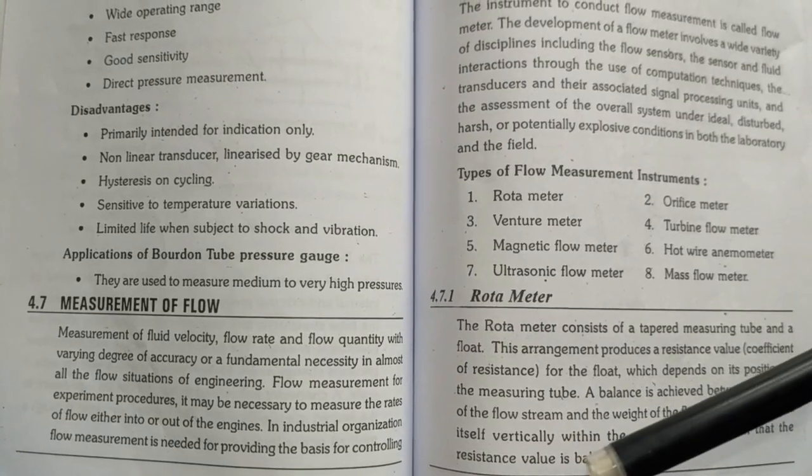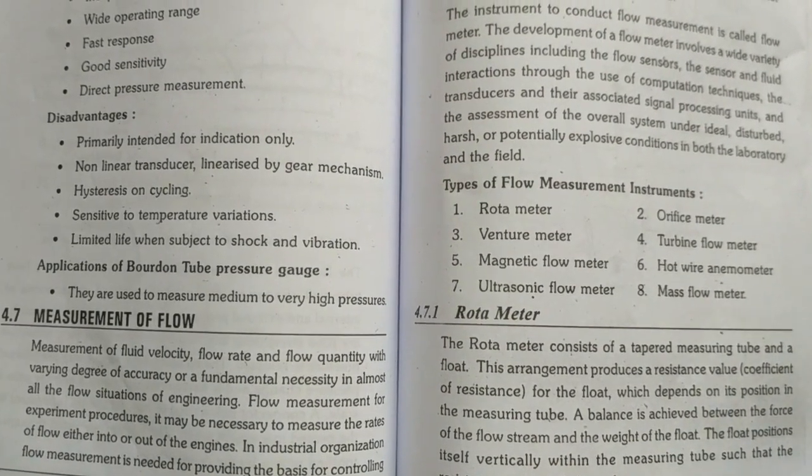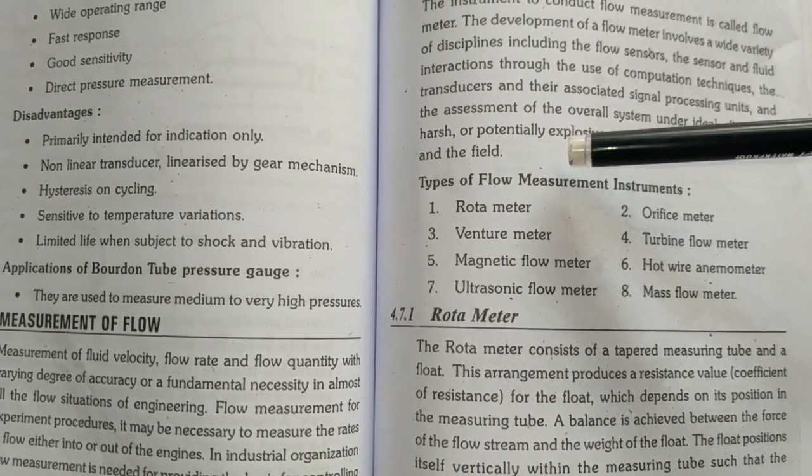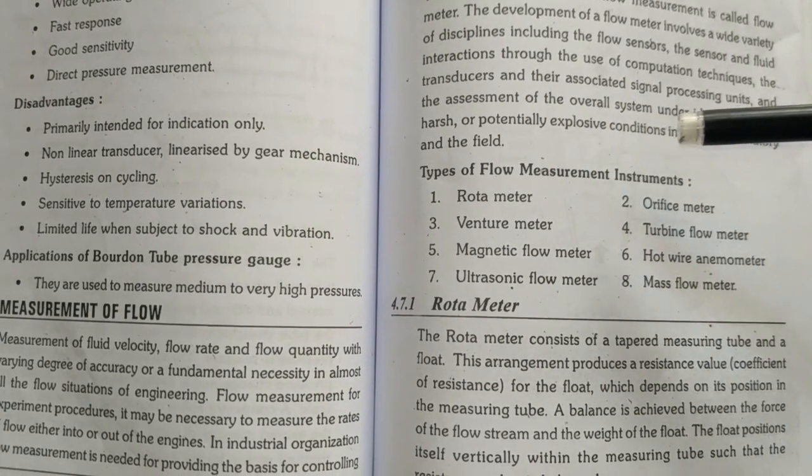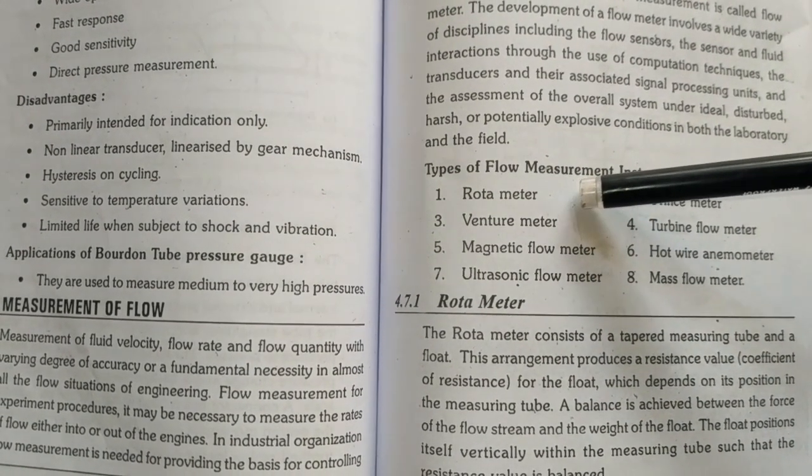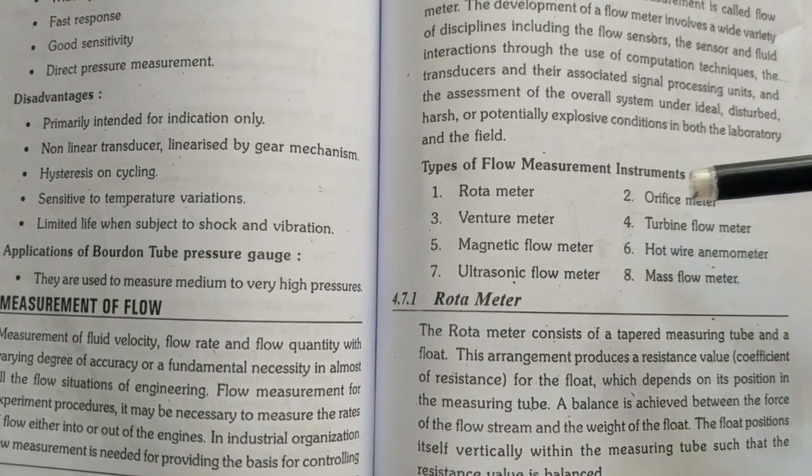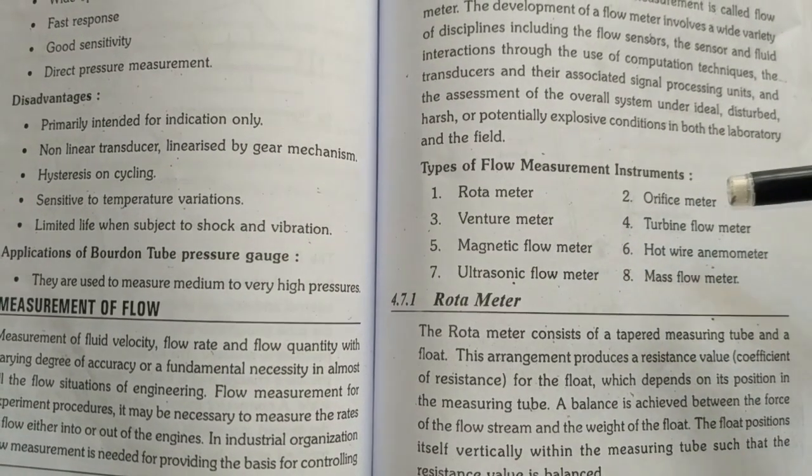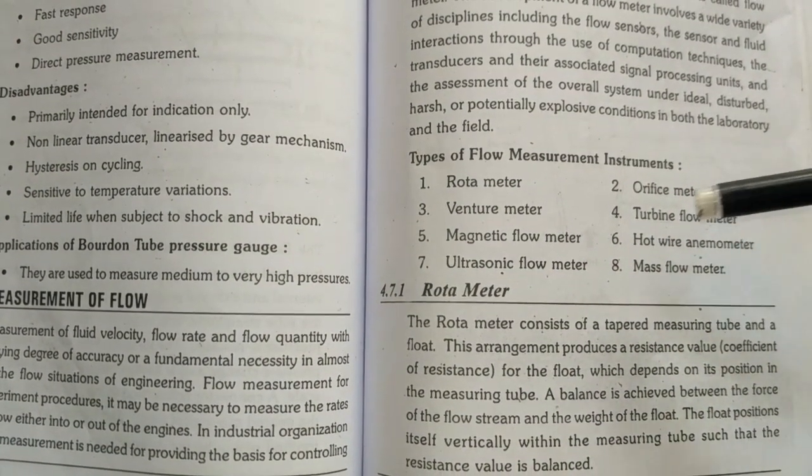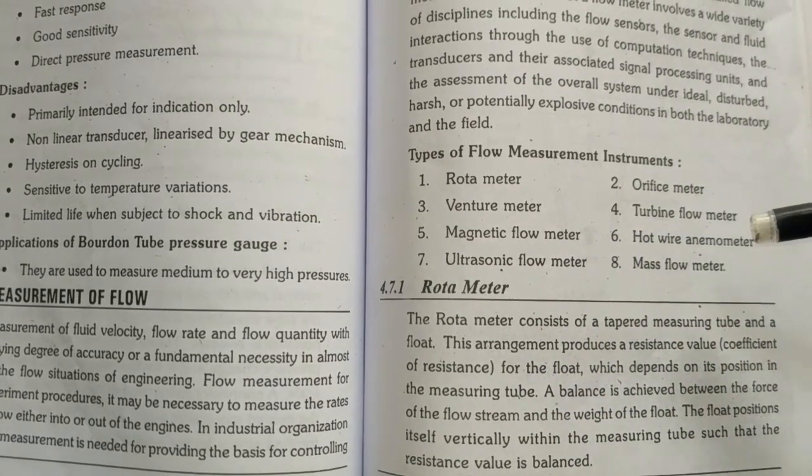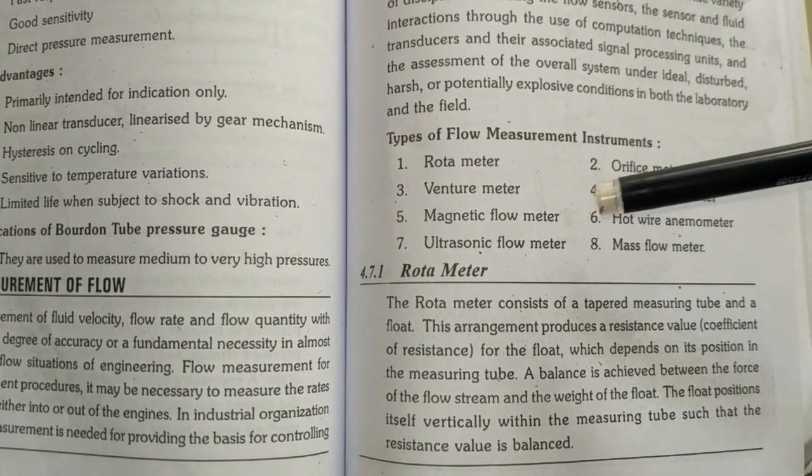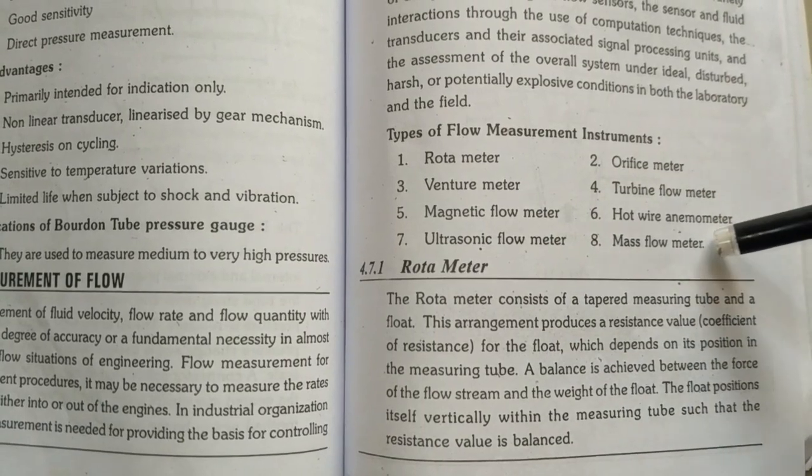I am going to talk about the types of flow measurement instruments. First one, rotameter, orifice meter, venturimeter, turbine flow meter, magnetic flow meter, hot-wire anemometer, ultrasonic flow meter, mass flow meter.